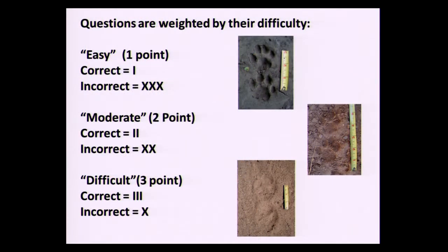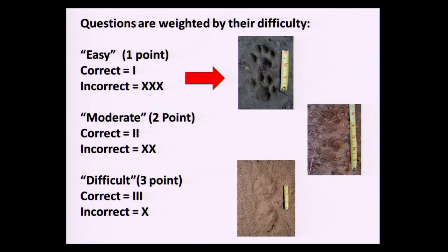Here's how we score the questions — these are all bobcat tracks in each of the three photos: front and hind pairs on different substrates. The first is clearly a bobcat track in terms of scale, number of toes present, and how detailed it is. It can't be confused with many other species based on those details. So we call that an easy one-point question. If you answer correctly, you get one point. If you answer incorrectly, you get three points off your score. So getting easy questions wrong can really hurt you.